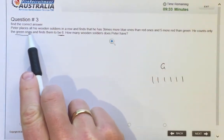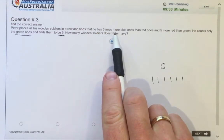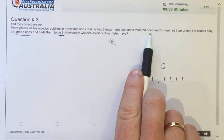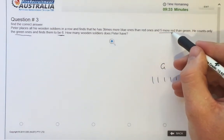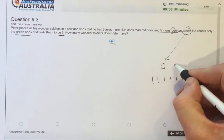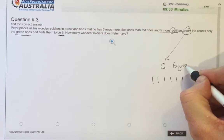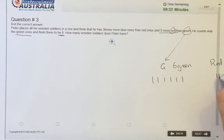In the question, Peter places all of the wooden soldiers in a row and finds that he has three times more blue ones than red ones and five more red than green. So he's got five more red than green. So he's got six that are green, five more red. So red, he's got six plus five. So he's got 11 red wooden soldiers.